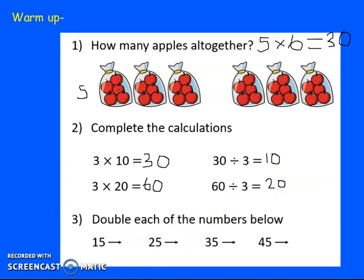Double each of the numbers below. So double 15, when we double it means that we are times by 2. And as you can see here, we have 15 there and 15 here, so we have already doubled 15, which equals 30. Double 25, so we double the 5, it makes 10. Double 20 makes 40. 40 add 10 equals 50.